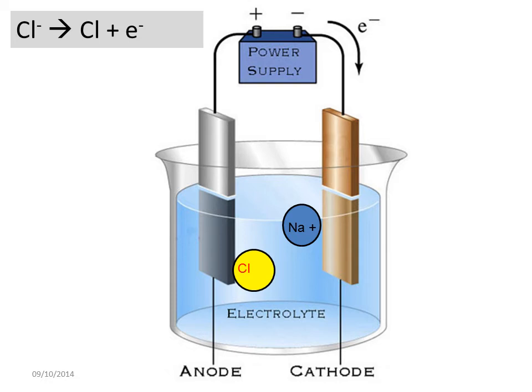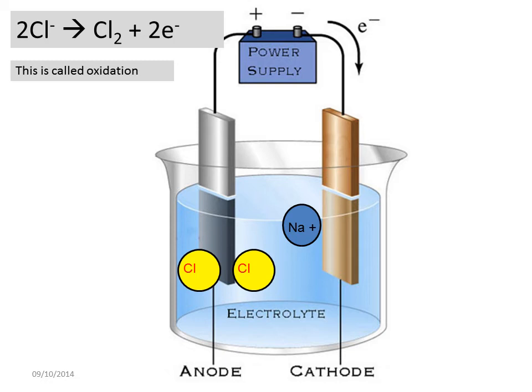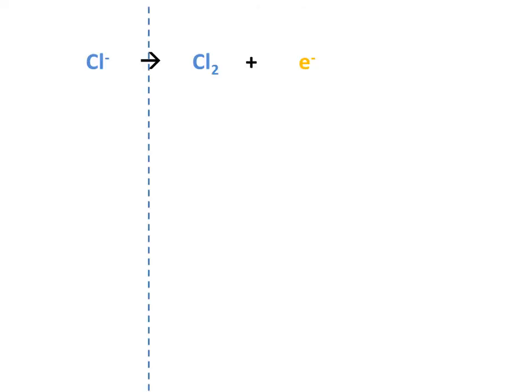In the case of chlorine, this reaction happens twice to make chlorine Cl2, which is a diatomic molecule. Let's take a look at that again. One chlorine ion loses an electron to become a chlorine atom. However, chlorine exists as Cl2, which is diatomic.